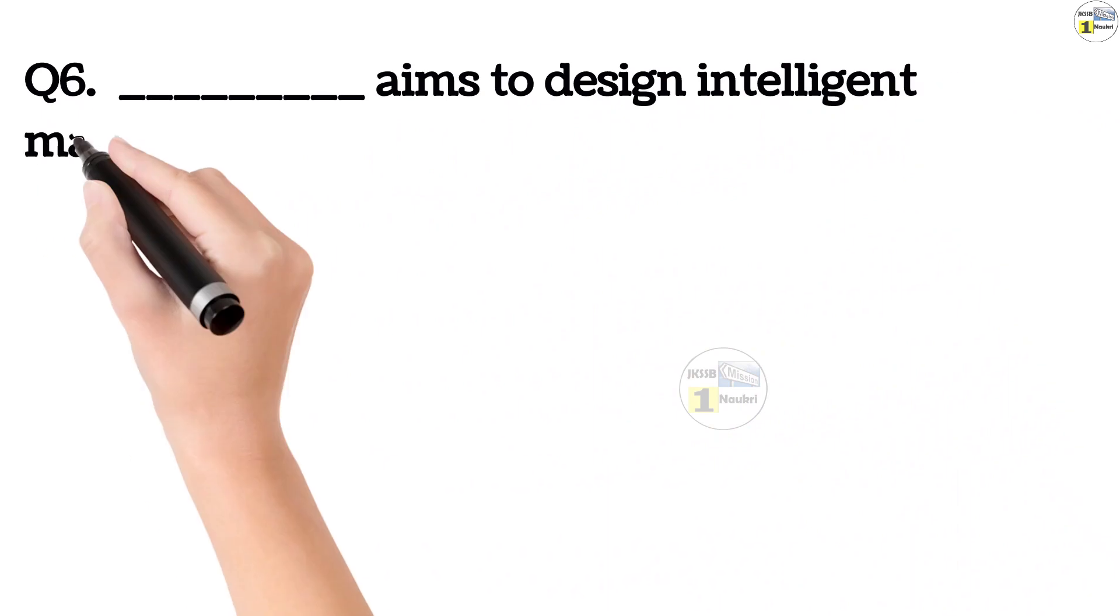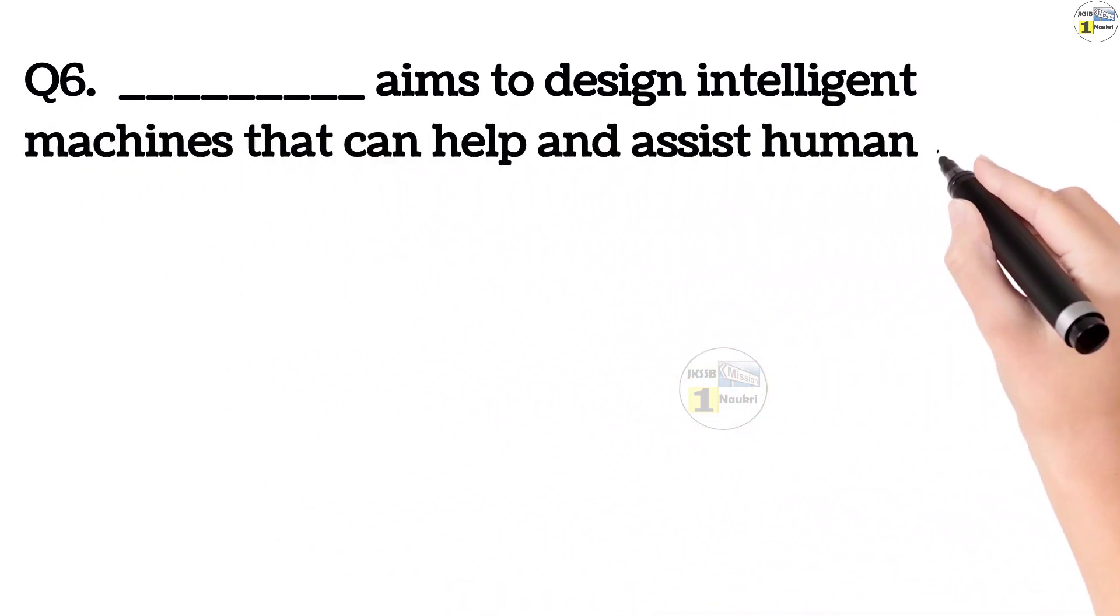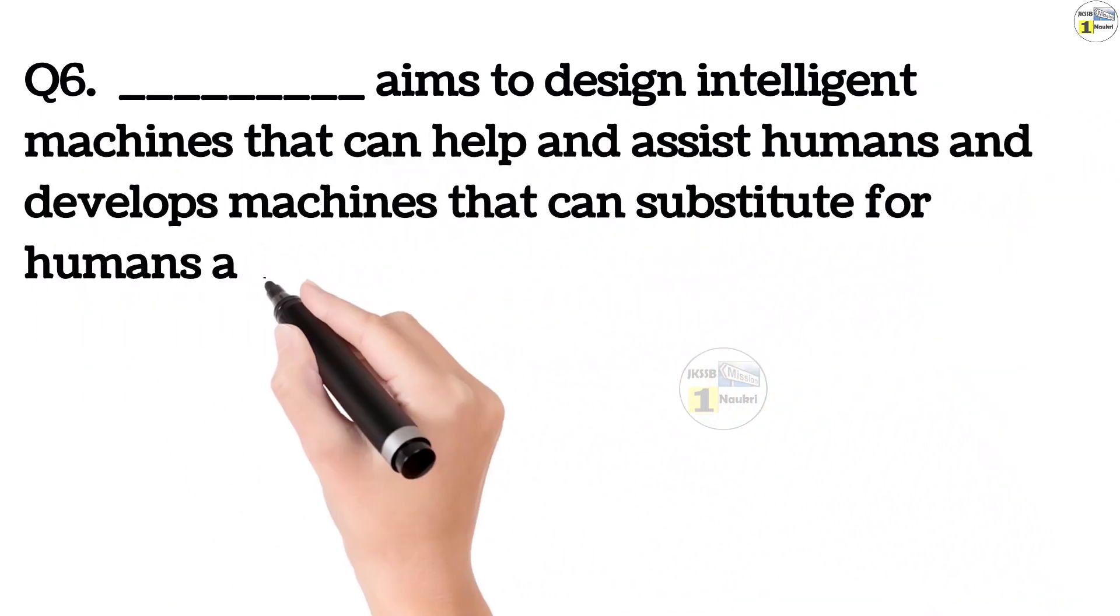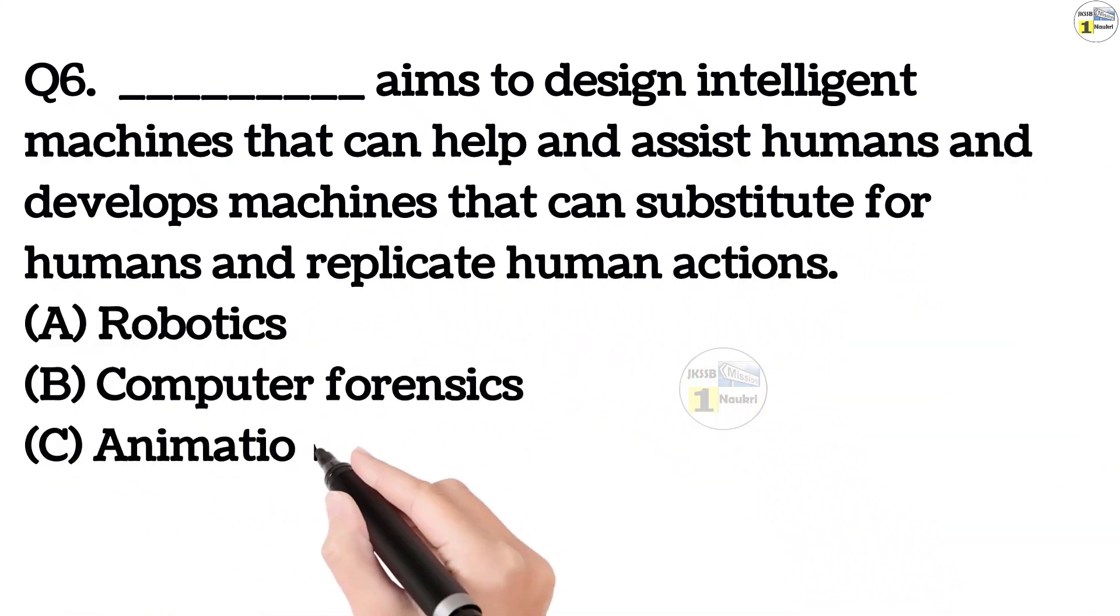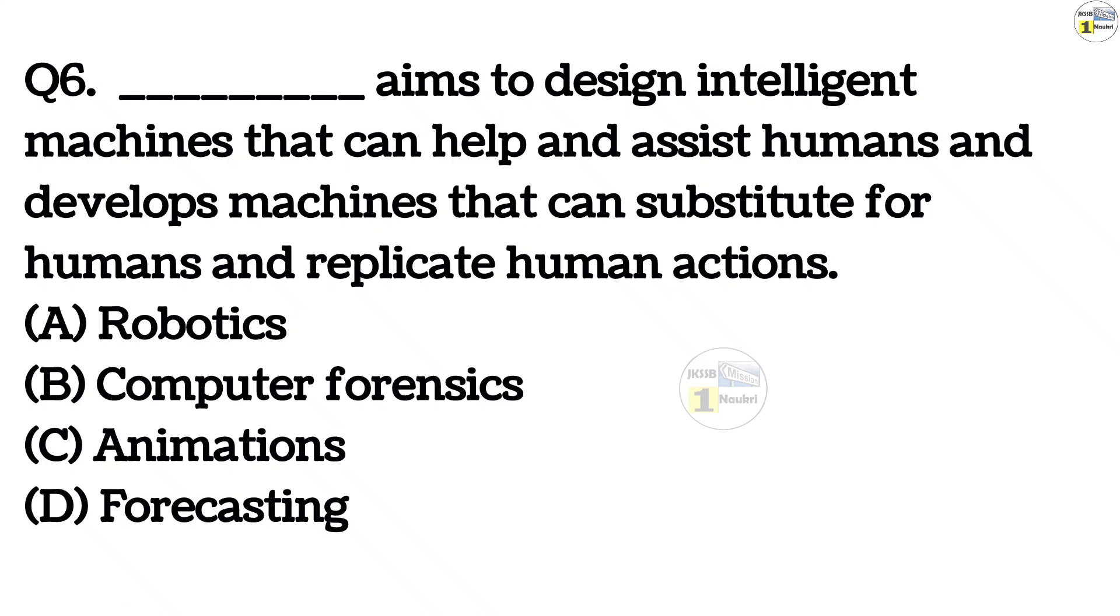Question number 6. Dash aims to design intelligent machines that can help and assist humans and develop machines that can substitute for humans and replicate human actions. Option A, robotics. Option B, computer forensics. Option C, animations. Option D, forecasting.